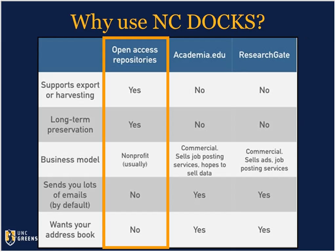Why would you want to use NC Docs versus other repositories that are out there? Some faculty members like to use academia.edu and ResearchGate, and I'm not here to tell you not to use these repositories, but I do want to illustrate some of the differences. Open access repositories like NC Docs support export or harvesting of data, making sure that your scholarship shows up in Google searches. We also support long-term preservation of the works. Our business model is non-profit, unlike academia.edu and ResearchGate, which are commercial services. We're not going to try to send you lots of emails by default, and we're not going to ask for your address book. We are here to make your scholarship more visible and more discoverable, not to make money off of you or your data.